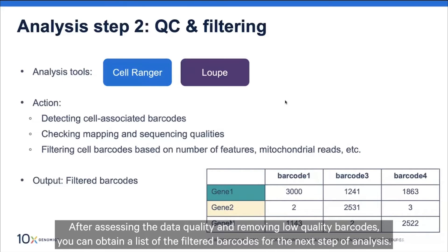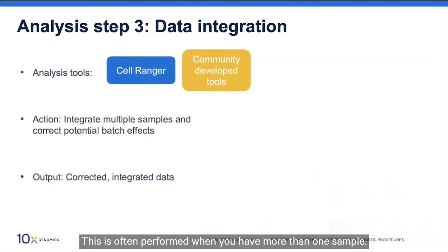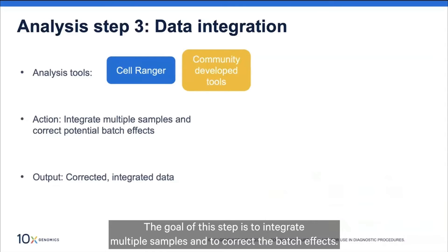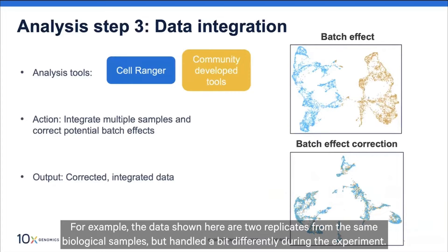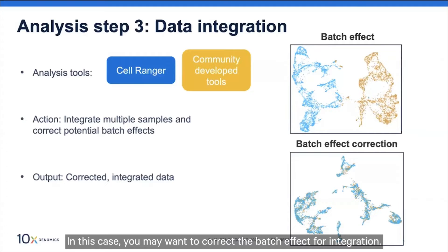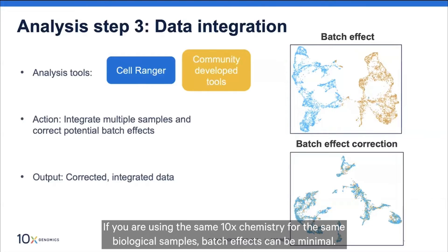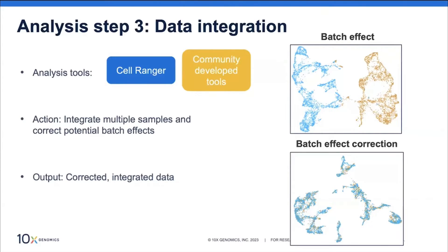The third step is data integration, often performed when you have more than one sample. You can achieve this using Cell Ranger or community developer tools. The goal is to integrate multiple samples and correct batch effects. For example, two replicates from the same biological sample but handled differently may appear as separated groups when visualized, suggesting batch effects. Batch effects can result from various technical factors, such as samples handled at different times or by different people.